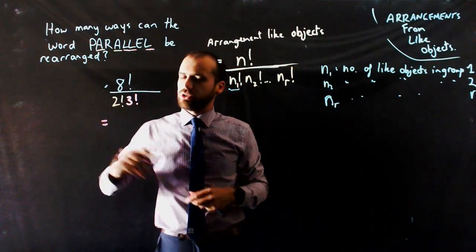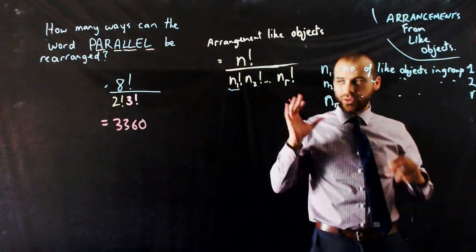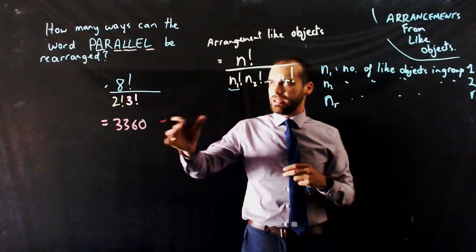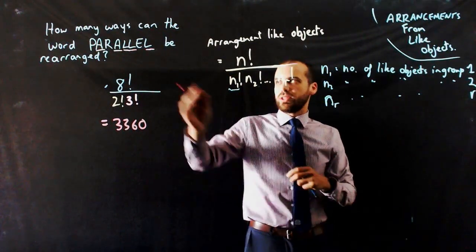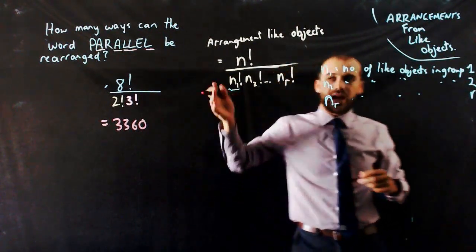So finally, we can type that into our calculator, and we'll get 3,360. Again, greatly reduced based upon the fact that it's indistinguishable whether you're using that L or that L or that A or that A.